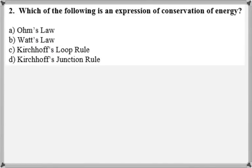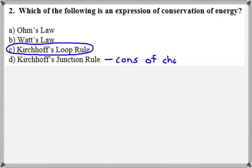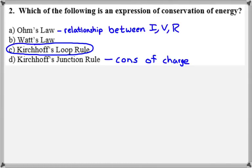Question number two: which of the following is an expression of conservation of energy? That would be Kirchhoff's loop rule, so I would go with answer C. The junction rule is a statement of conservation of charge, and Ohm's law is the relationship between current, voltage, and resistance. The loop rule is our statement of conservation of energy in a circuit.